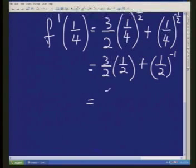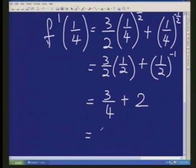Further simplification gives us 3 quarters, and a half to the negative 1 is plus 2. So our function, our derivative function value of a quarter, will be 2 and 3 quarters.